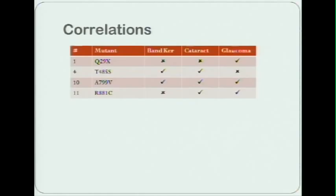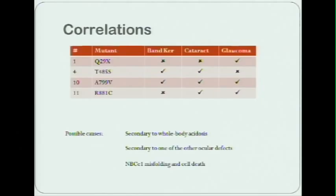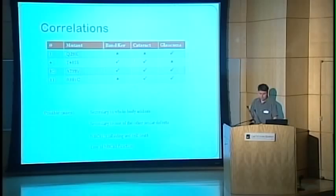We're going to be looking at the T485S, the R881C and the A799V as an example of one of the eight that causes all three of the ocular pathologies. There are four possible causes that one could imagine. They could be secondary to the whole body acidosis. One of these ocular defects could be secondary to another of the ocular defects. They could be caused by NBCe1 mutant misfolding, which could cause cellular apoptosis in key cell layers, or it could be due to loss of a physiological function of NBCe1.